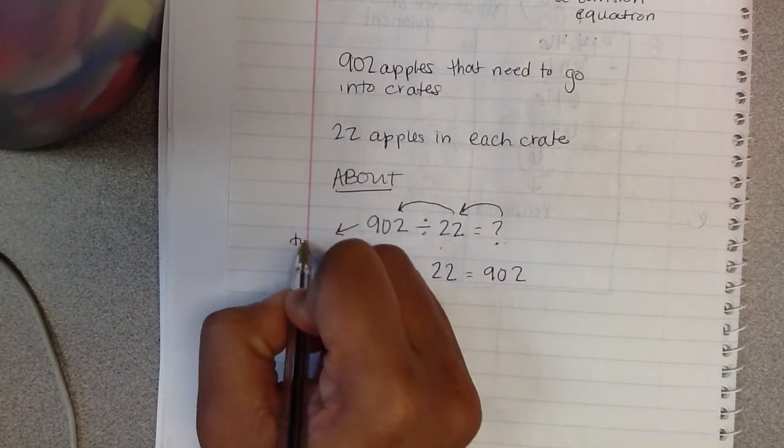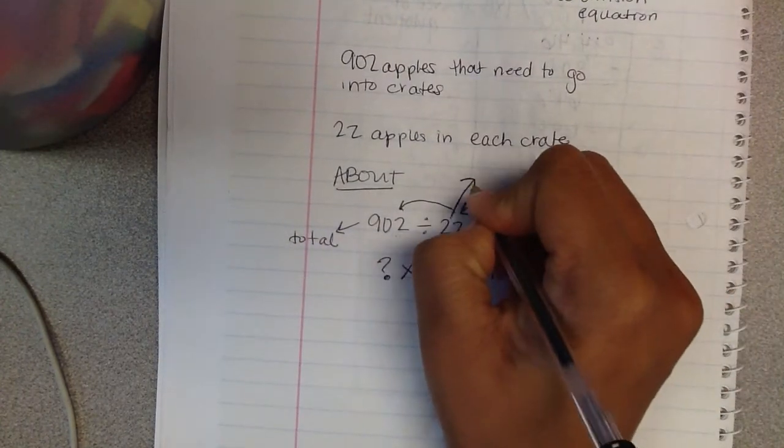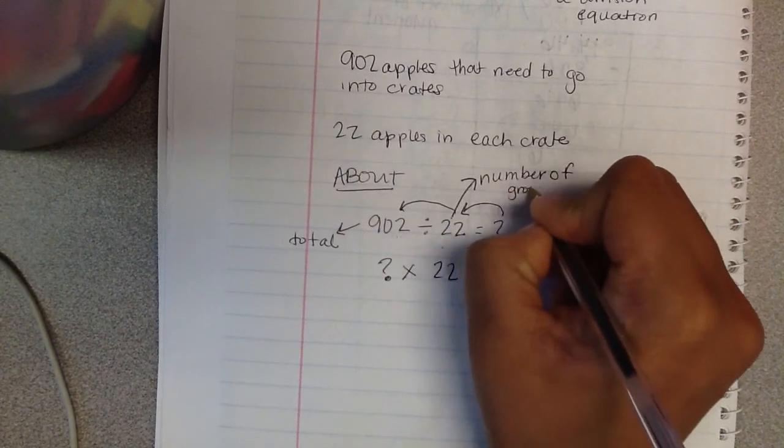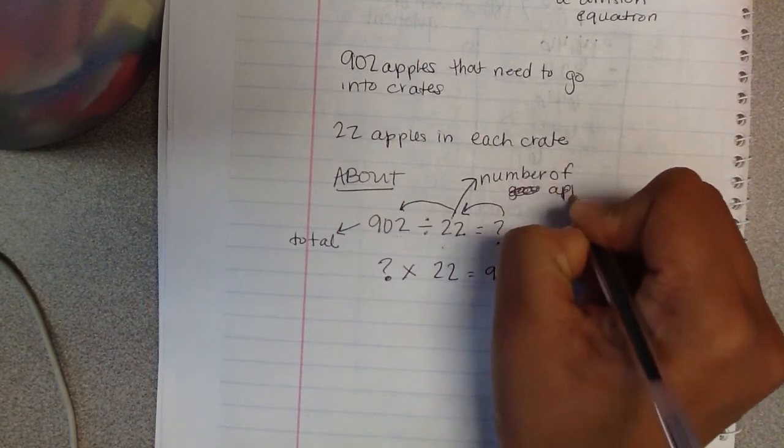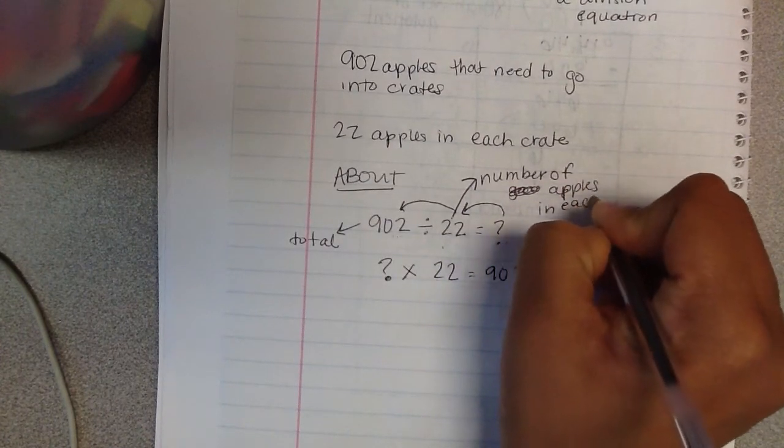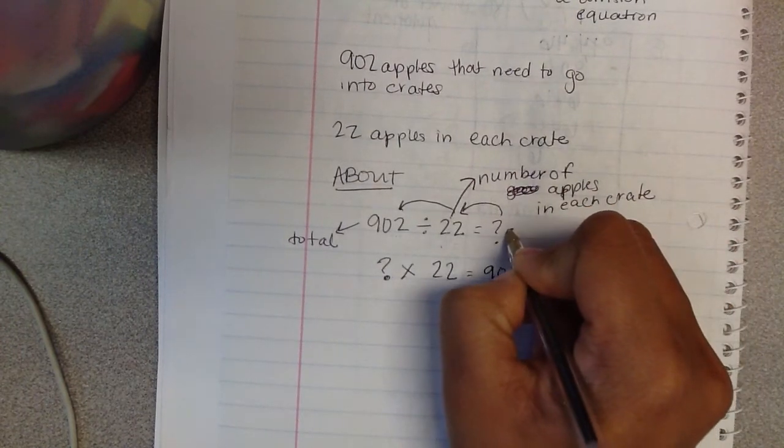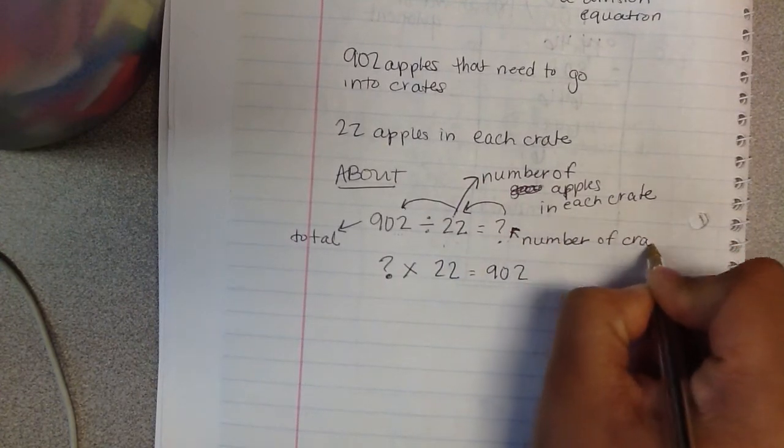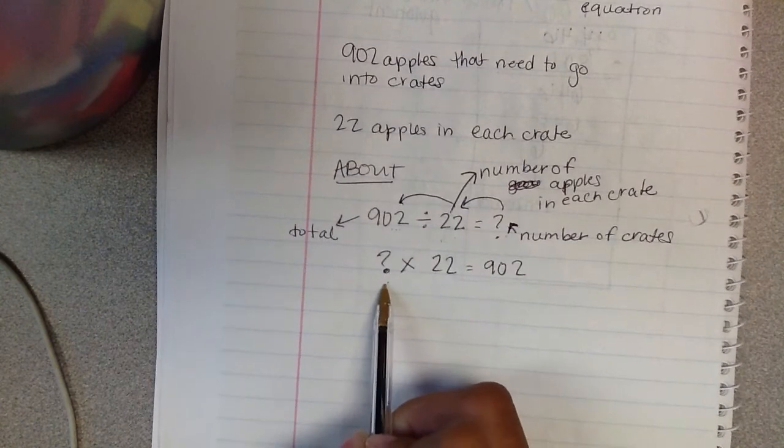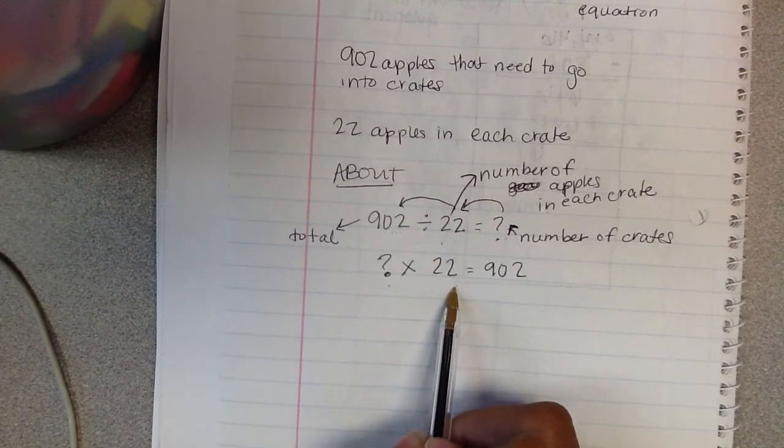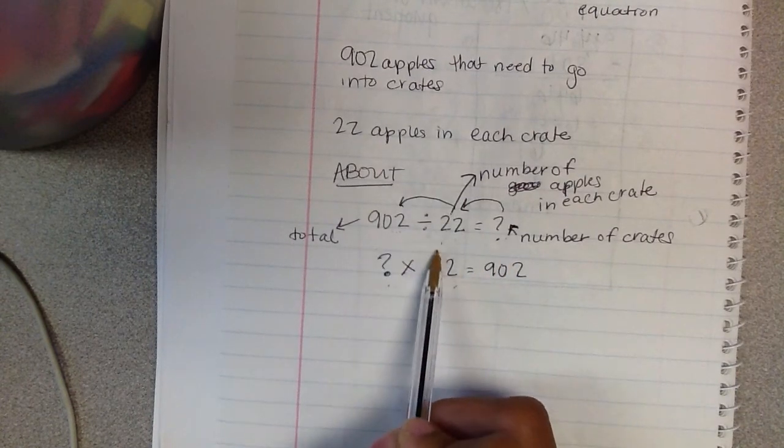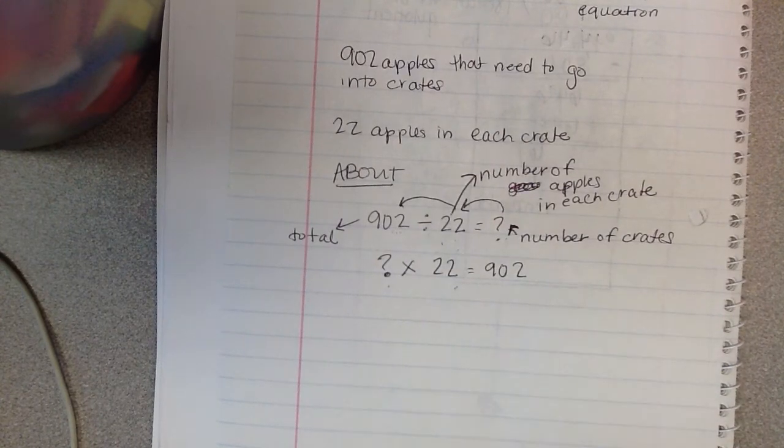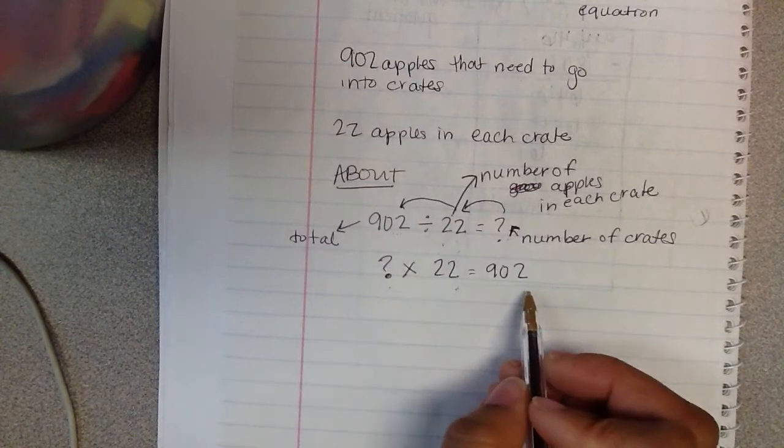So let's write that over to the side. My total is right here, the number of apples in each crate. And then my answer is the number of crates. So it makes sense. I should be able to take the number of crates, multiply it by how many are in each crate, and get 902. Just like I should be able to take my total, divide it by the number in one crate, and get the number of total crates that it's going to take to pack all these apples.